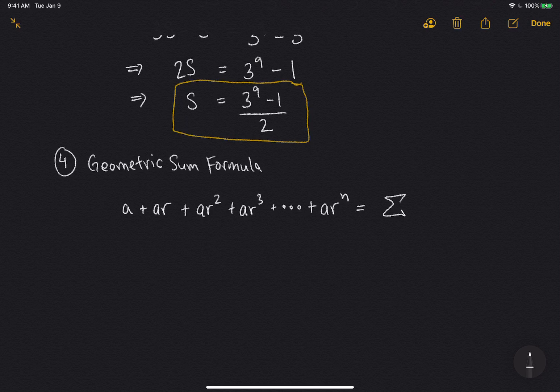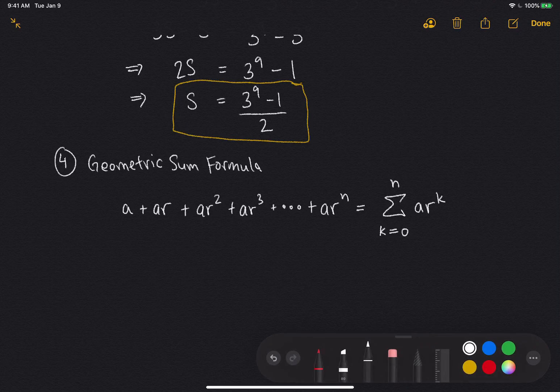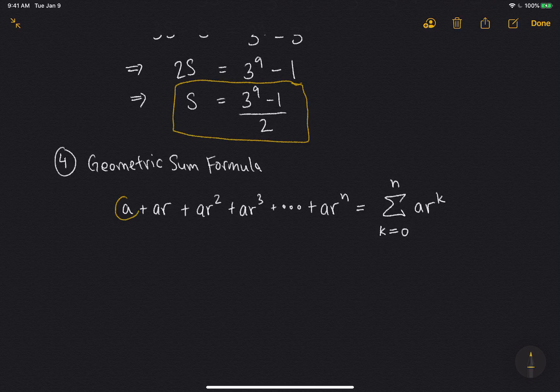So I can write this in sigma form. So sigma and the counter starts with, let's say, k equals 0. And it goes up until n of ar to the power k. So this is called a geometric sum. This a here is called the initial term because it's the first one. And this value r is called the common ratio.